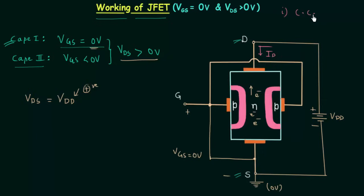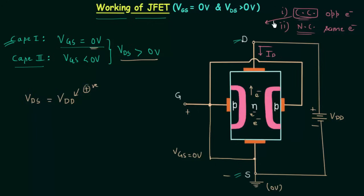We already know there are two types of currents: conventional current and natural current. The conventional current has a direction opposite to the direction of electrons, while the natural current has the direction same as the direction of electrons. We can also define conventional current as the current having the direction same as the direction of positive charge movement. ID is the conventional current; its cause is the movement of electrons from bottom to up, from source to drain, because we have connected VDD across the drain and source terminals.